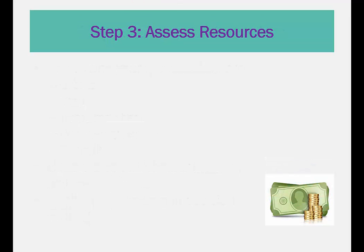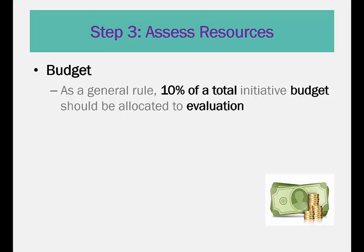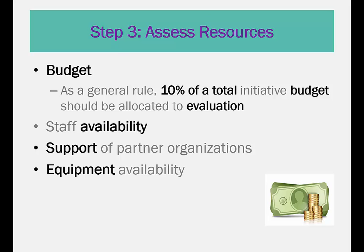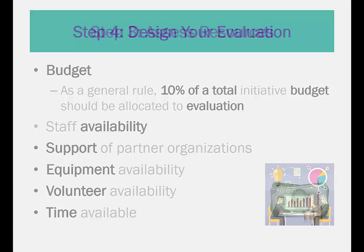Step 3: Assess resources. Do you have the funding available to implement your initiative? What does your budget look like? As a general rule, 10% of a total initiative budget should be allocated to evaluation. What is your personal capacity? Staff availability? Are you able to tap into the support of partner organizations? Does equipment need to be purchased? Do you have any volunteers available?